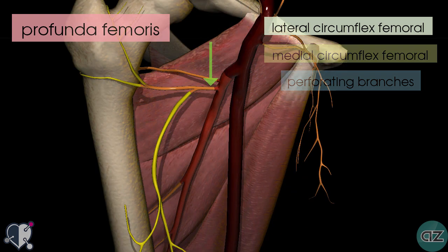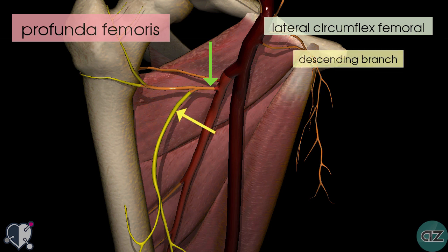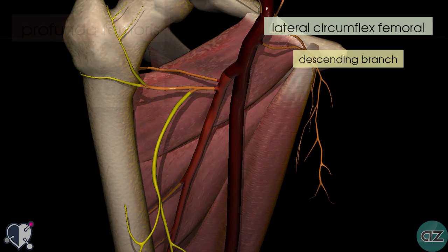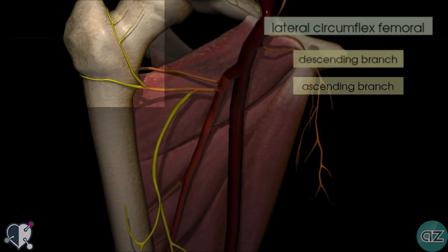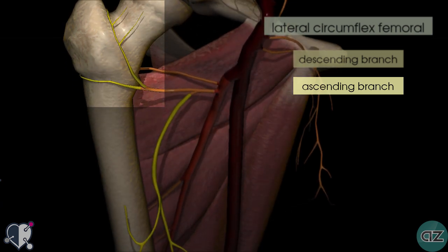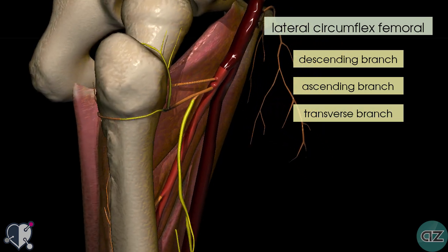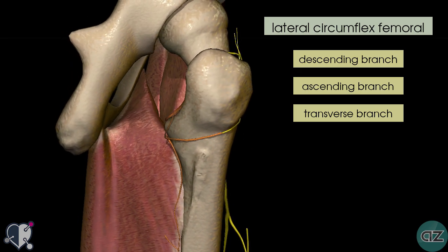The lateral circumflex artery has three branches. The first one is the descending branch, and then coming up to the shaft of the femur you've got two branches: one ascends up onto the neck of the femur, and the other one is called the transverse branch, which winds around laterally around the proximal shaft of the femur as you can see here.